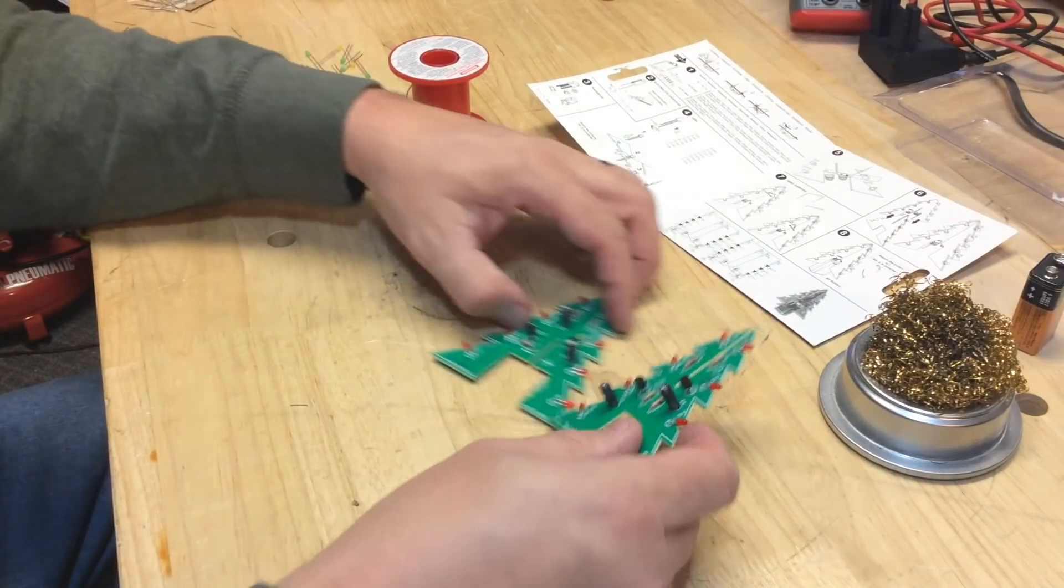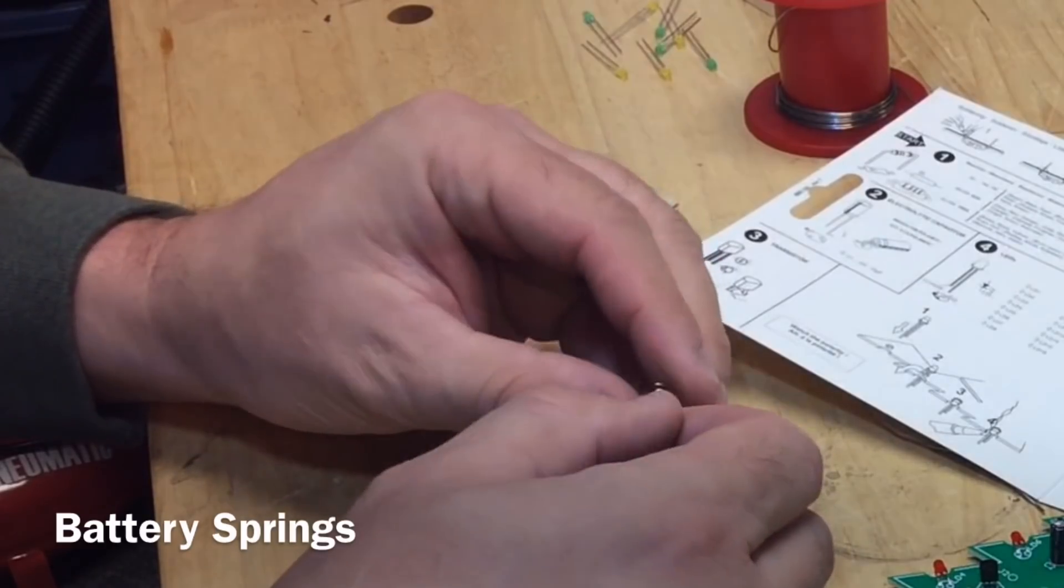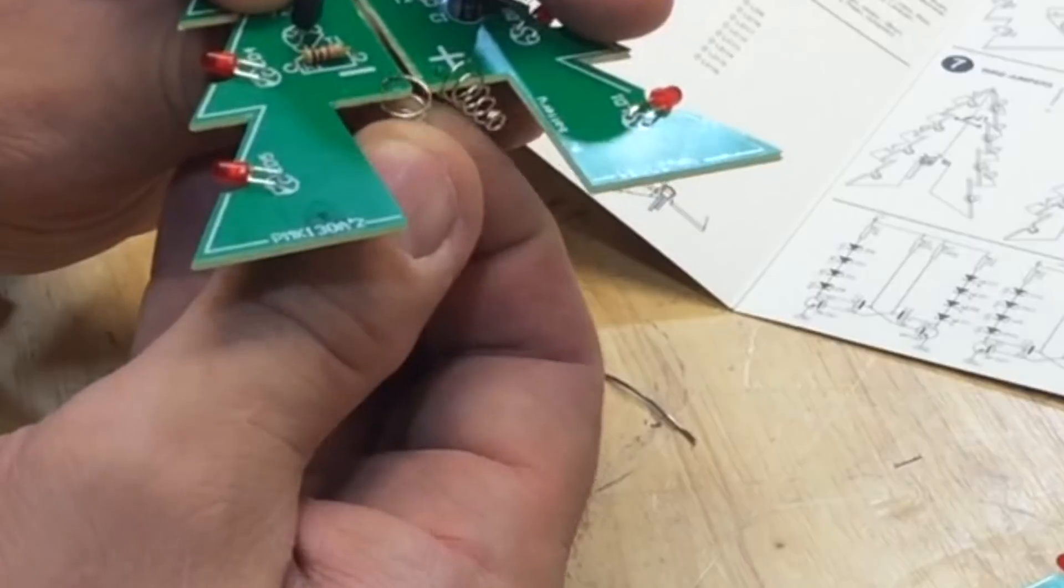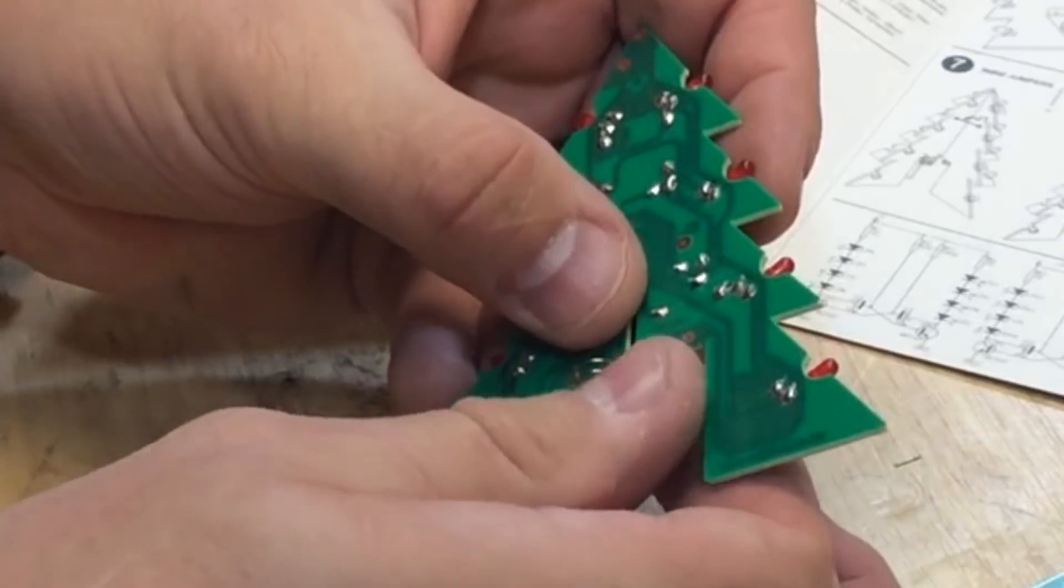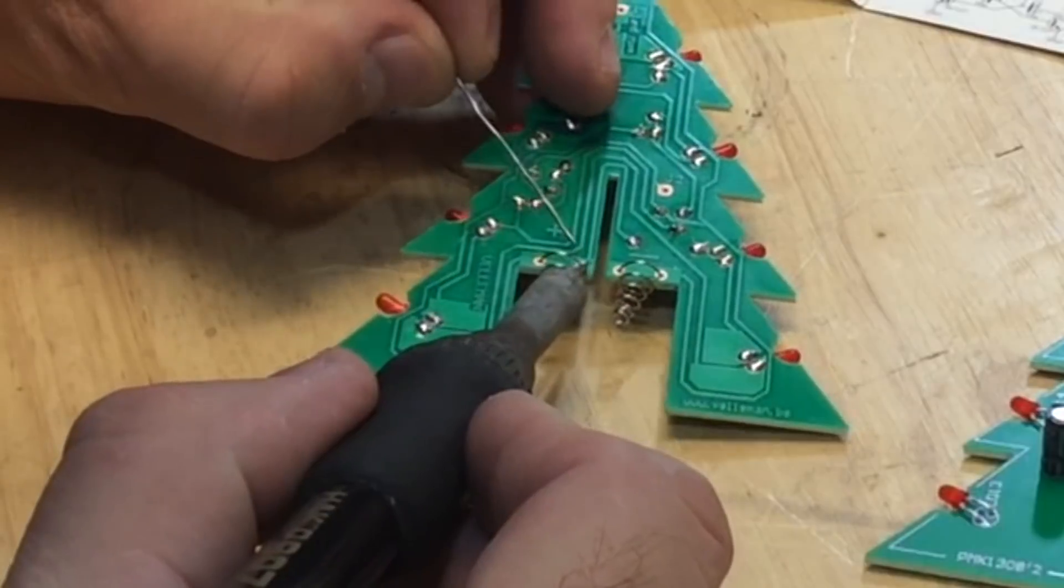Basically I had the boards done, but now I had to install the spring clips which will actually sit on the batteries. So you have to feed them through these two little holes and spin it into the other hole and solder them in place.